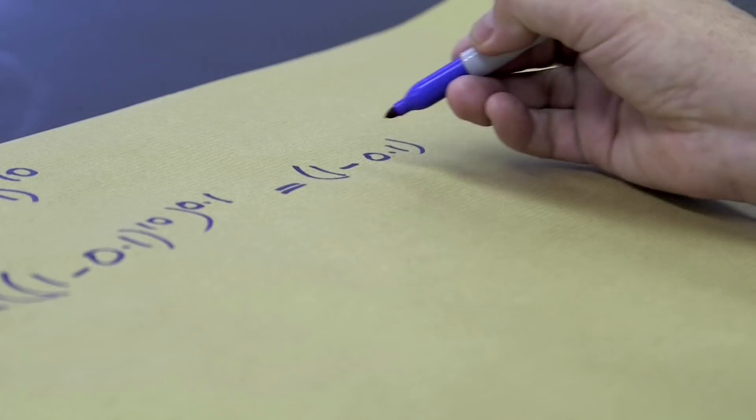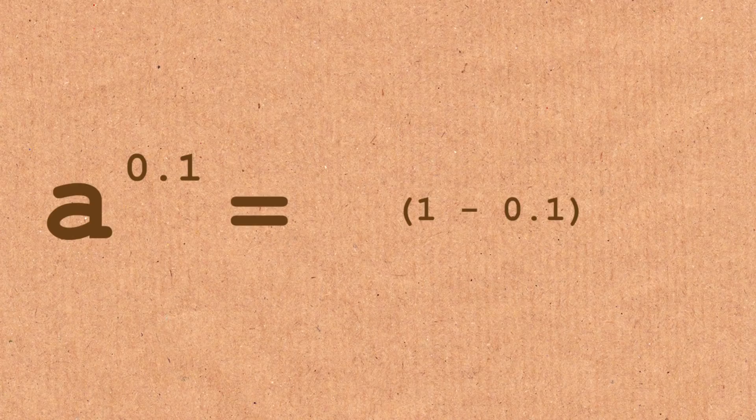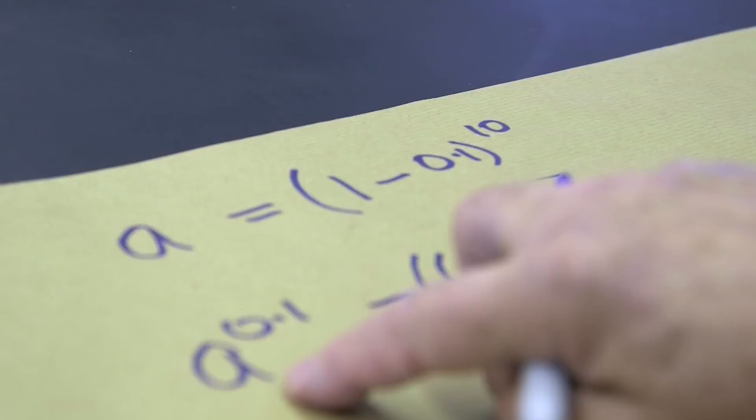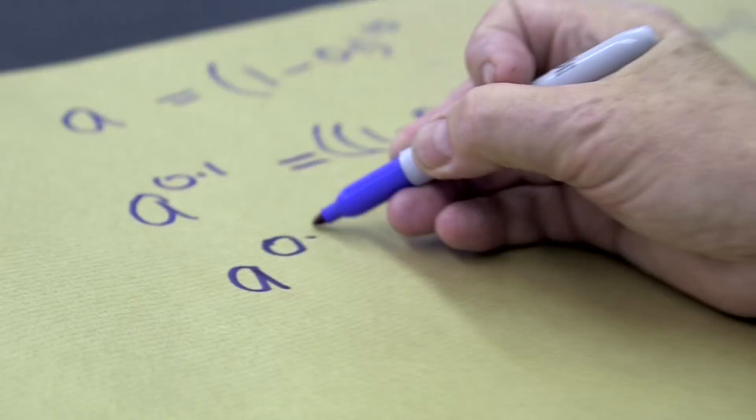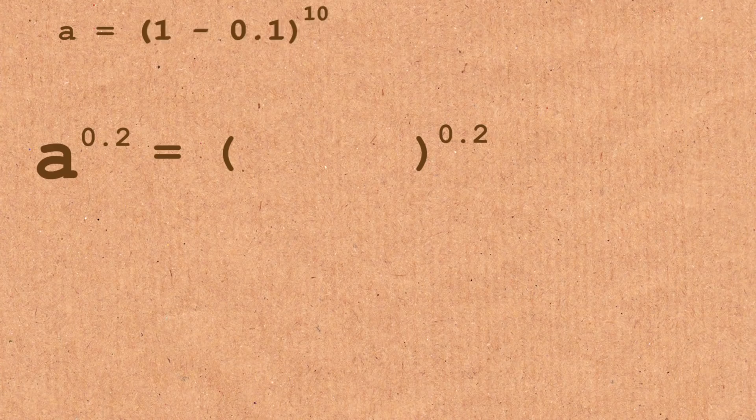0.9 is this number, this exponent, to the power of 0.1. If I were to do this again and put in 0.2 to the power of 10 times 0.2, which is 1 minus 0.1 to the power of 2.